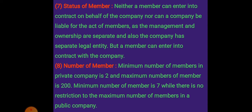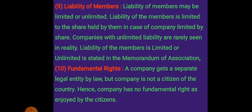The number of members in a private company is minimum two and maximum 200. In a public company, the minimum is seven and there is no restriction on the maximum number. Regarding liability, if the company is registered as a limited company, the liability of members will be limited to the amount they hold as shares. If registered as an unlimited company, liability won't be fixed. As an artificial person, the company does not get citizenship and cannot enjoy the fundamental rights enjoyed by its members.